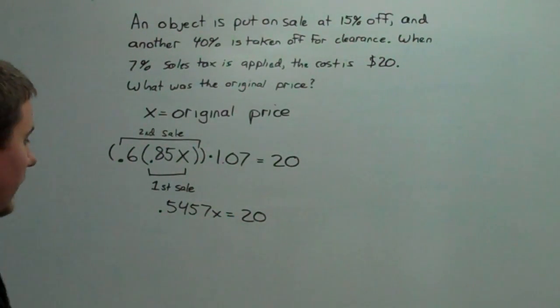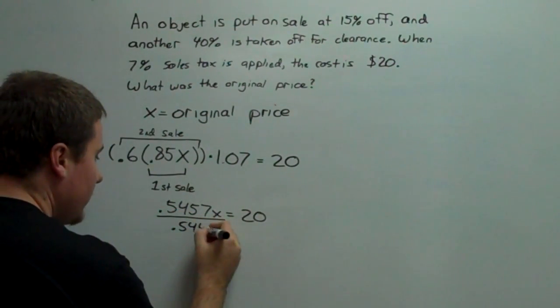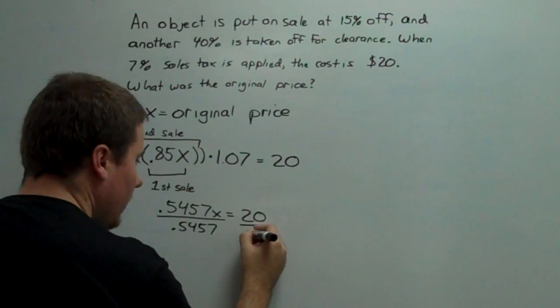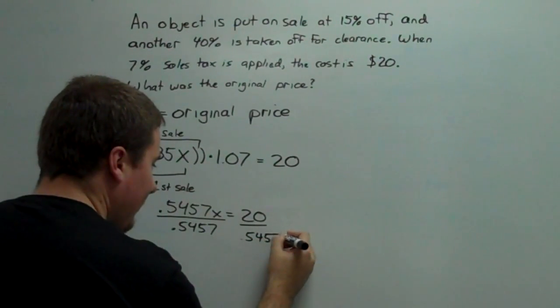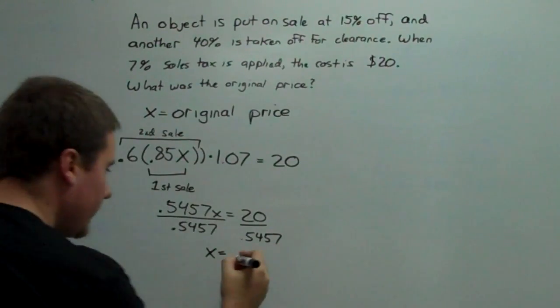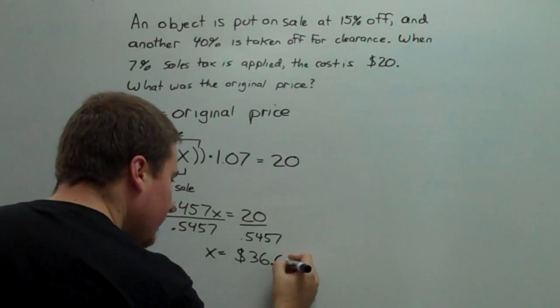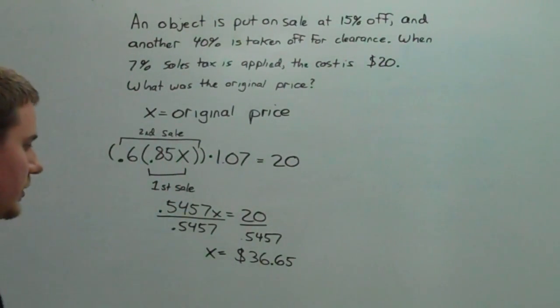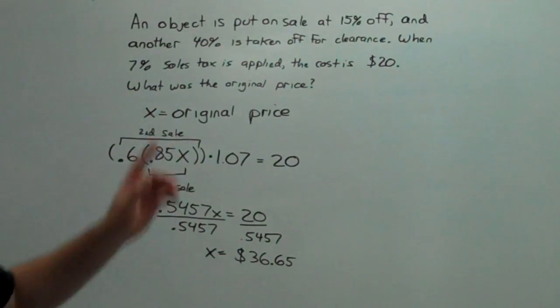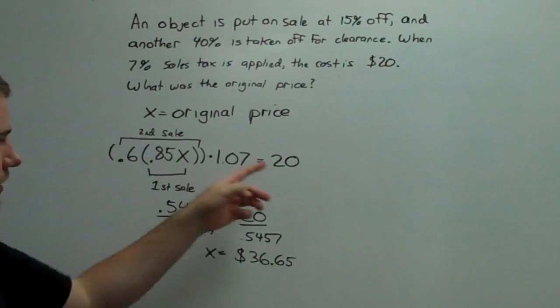Now, to solve for x, we just divide. So divide it by 0.5457 and then plug it into our calculators. And we get a price of $36.65. So $36.65, 15% off, 40% off, and then add 7%, and you'll get $20.